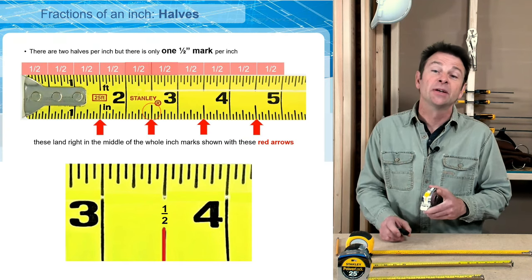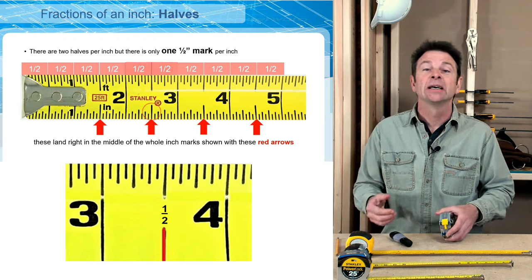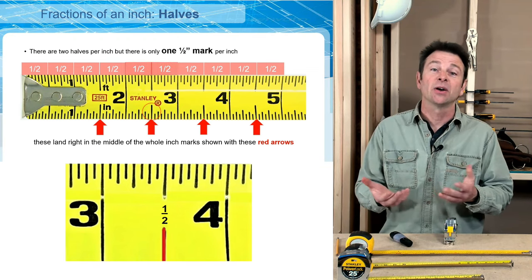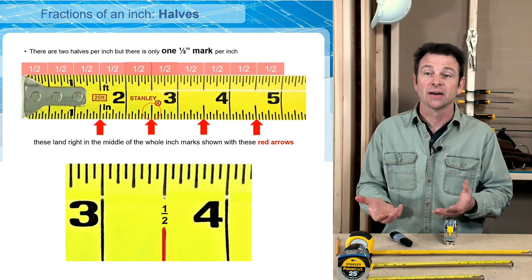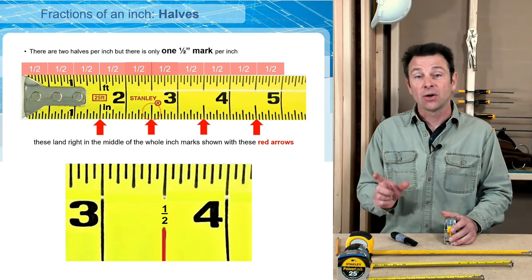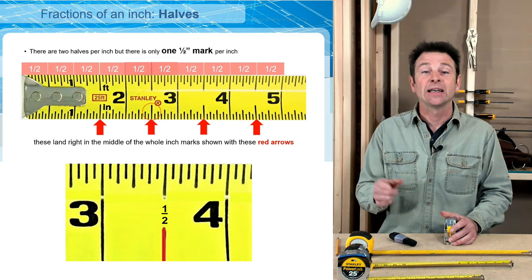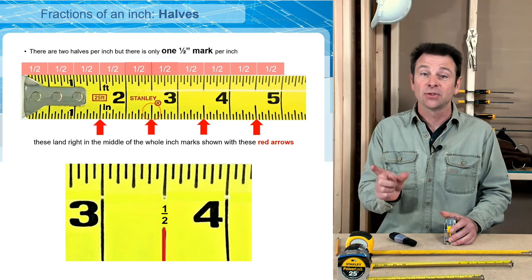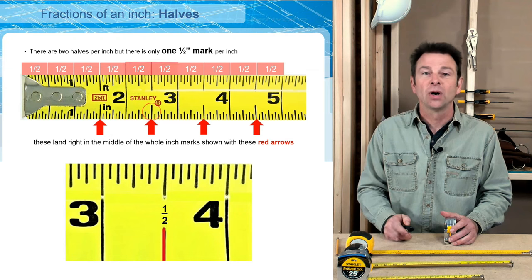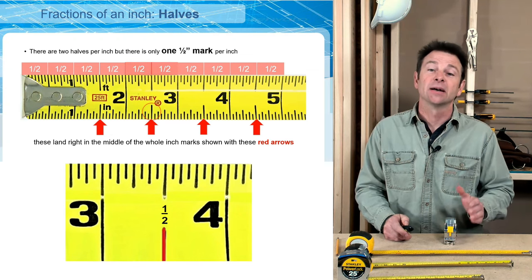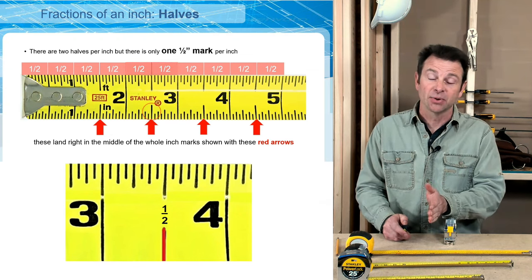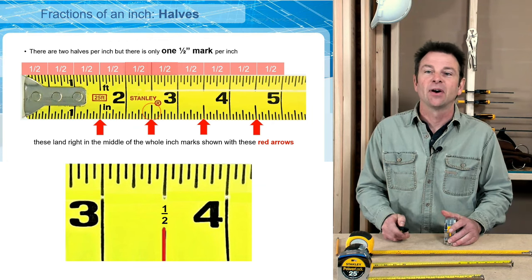Here we have two half inch parts. If I have a whole inch and I divide it in half, I have two half parts. That is going to leave us with only one half inch mark because it falls right in the middle, dividing those two parts. So here we have our half.